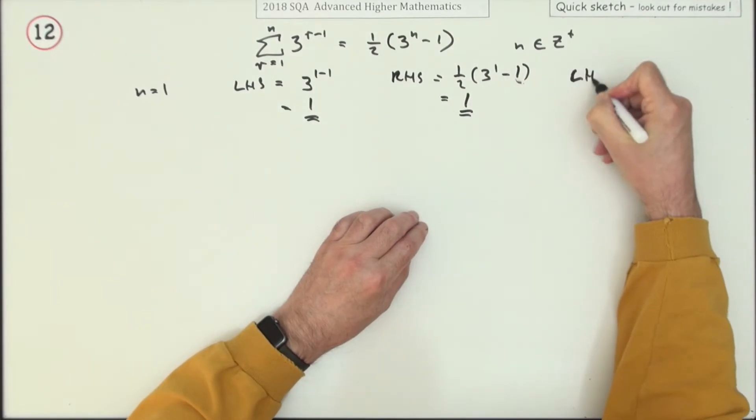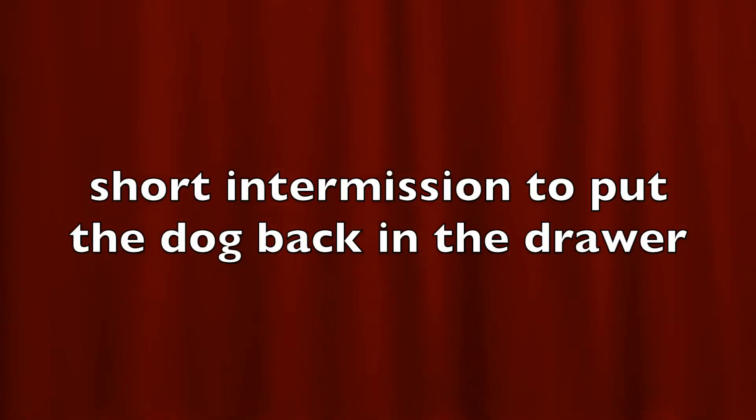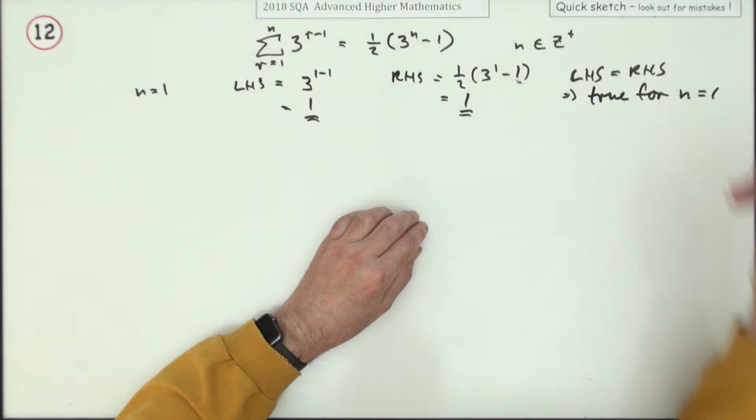So left-hand side is equal to the right-hand side, which means it's true for n equals 1.